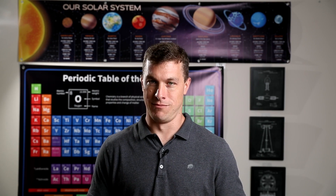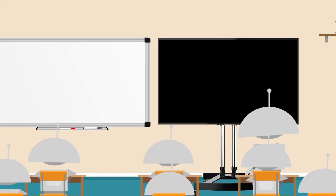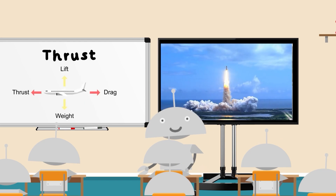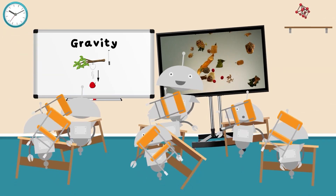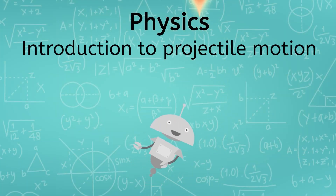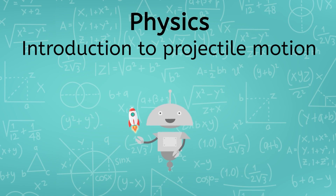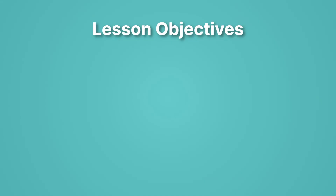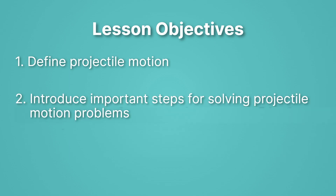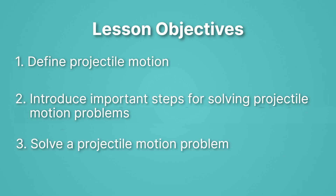In this lesson, we're going to learn all about projectile motion — throwing things. We're going to take a look specifically at an example with a home run. Let's learn. Let's begin by considering our lesson objectives. First we'll define projectile motion, so you know just what we're looking at. Then we'll introduce the important steps for solving projectile motion problems. At the same time, we'll solve a projectile motion problem, going back and forth between introducing a step and then using it, so that you get a really good idea of how to solve these problems.